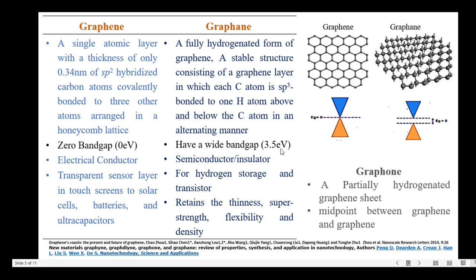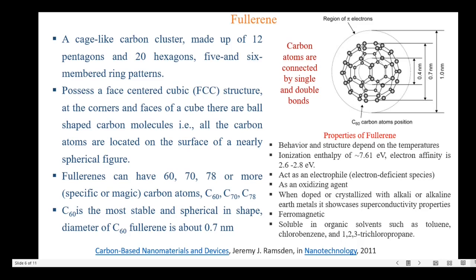Graphene is a zero band gap material, so it behaves as a good electrical conductor. Graphane is a wide band gap material at about 3.5 electron volts, so it behaves like a semiconductor or sometimes an insulator. Graphene is used as a transparent sensor layer in touch screens, solar cells, batteries, and ultra-capacitors, while graphane is used as a hydrogen storage material and a transistor, retaining the thinness, super strength, flexibility, and density of graphene. Another form is graphone — it is a partially hydrogenated graphene sheet, a midpoint between graphene and graphane.